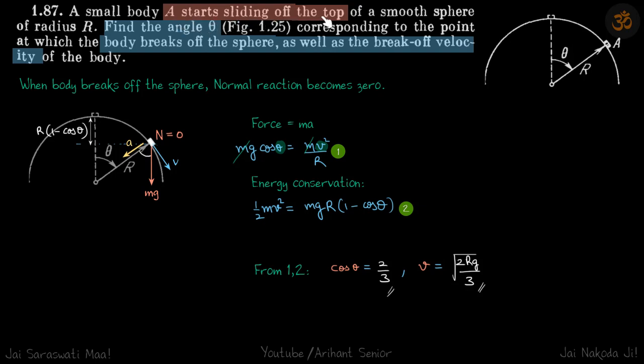A body starts sliding off the top of a smooth sphere. We need to find the angle theta at which the body breaks off the sphere and what is its velocity at that instant. So let's say it breaks off at an angle theta.